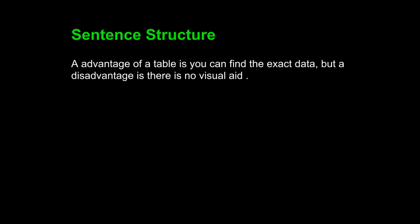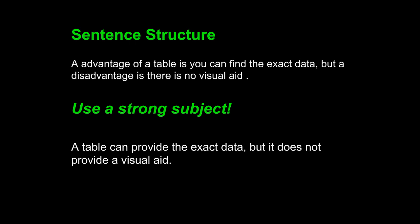Take a look at this sentence: an advantage of a table is you can find the exact data, but a disadvantage is there is no visual aid. Right now, the student has not used a clear subject. We want to use a strong subject in each sentence. Advantage and disadvantage are not strong subjects. We will rewrite with 'table.'